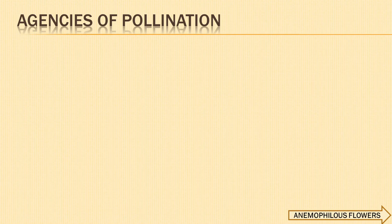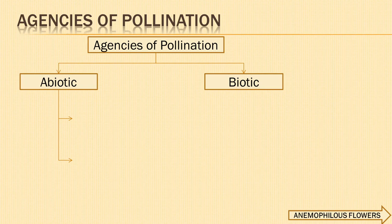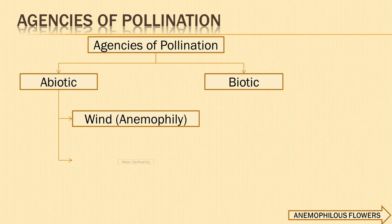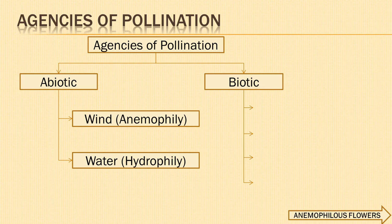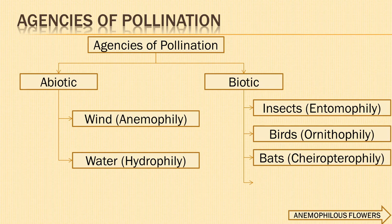Next, we come to agencies of pollination. Agencies of pollination can be studied under two broad headings: abiotic and biotic. The abiotic agents consist of wind, known as anemophily, and water, hydrophily. Biotic agents consist of insects (entomophily), birds (ornithophily), bats (chiroptophily), and finally snails (malacophily).